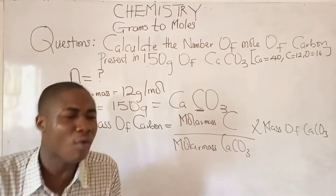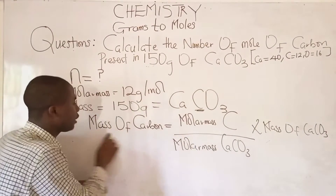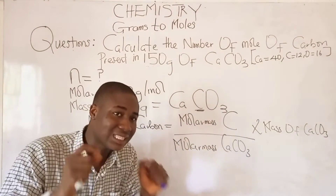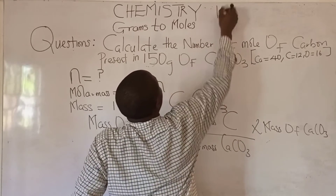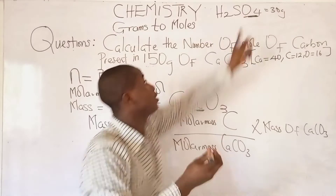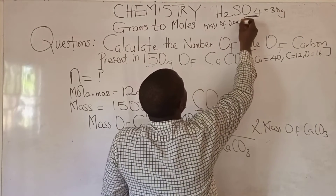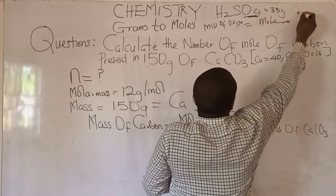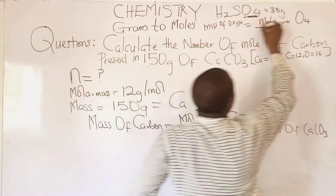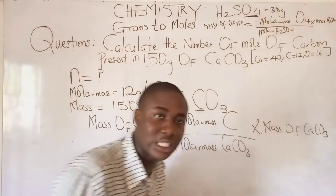Whenever we are asked to calculate the number of moles of a particular element in a compound, we first extract the mass of that element. For carbon in CaCO₃: mass of carbon = (molar mass of carbon / molar mass of full compound) × mass of CaCO₃. For example, if asked for oxygen in H₂SO₄, we would write: mass of oxygen = (molar mass of O₄, since there are 4 oxygen atoms / molar mass of H₂SO₄) × mass of H₂SO₄.